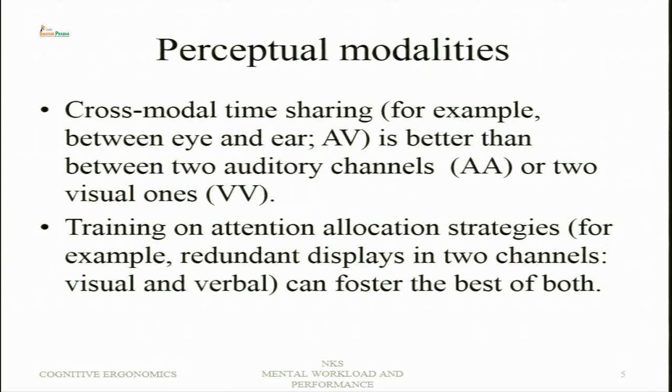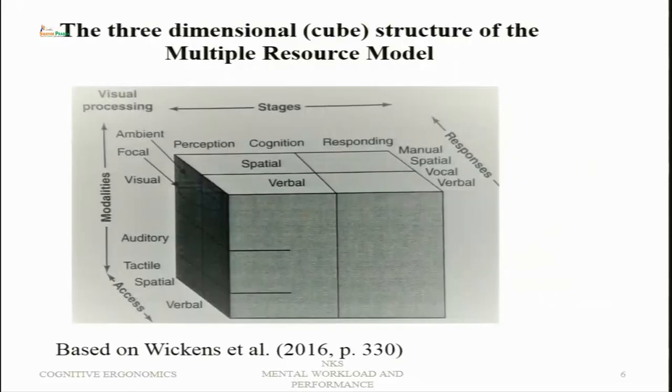Training on attention allocation strategies — for example, redundant displays in two channels, visual and verbal — can foster the best of both. The point is that redundancy means presenting the same information in two different channels. Therefore, if both auditory and verbal modalities present the same information in an audio-visual presentation, the effect of interference can be further reduced.